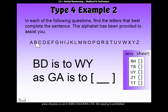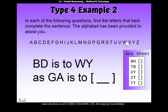To get from B to W, going back 1, 2, 3, 4, 5 — that's back 5. To get from D to Y, we go back 1, 2, 3, 4, 5 — also back 5. So applying the same rule to GA: back 5 from G gives us B, and back 5 from A gives us V. So our answer using the old method would be BV. But BV doesn't appear on the answer sheet, so there must be some other method of getting from BD to WY.